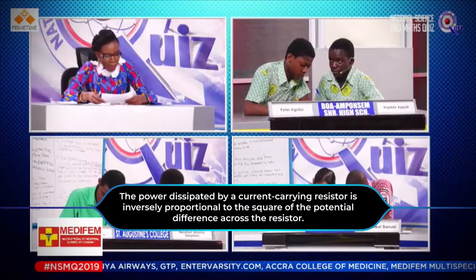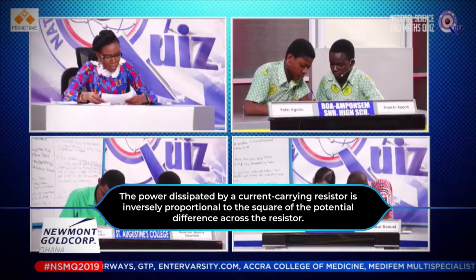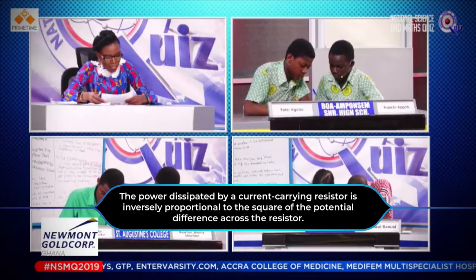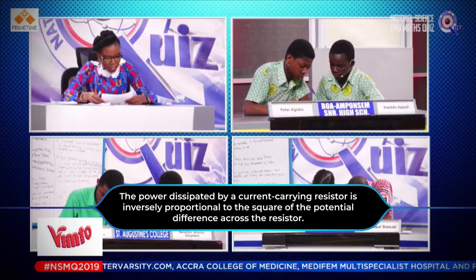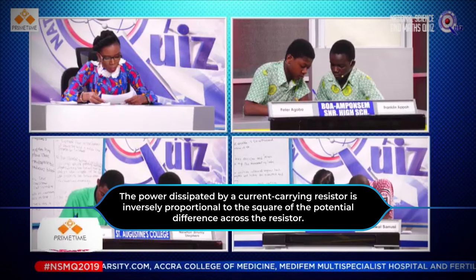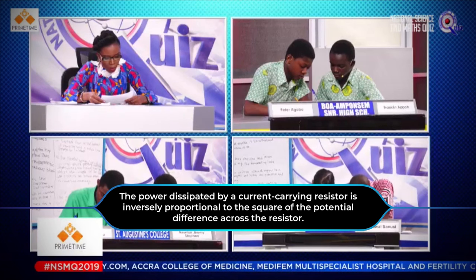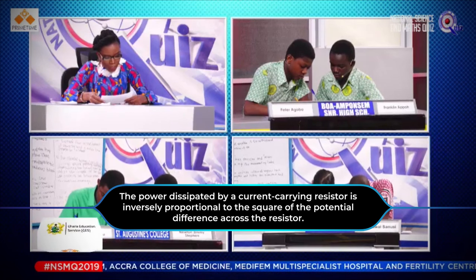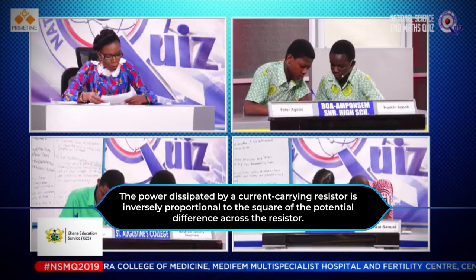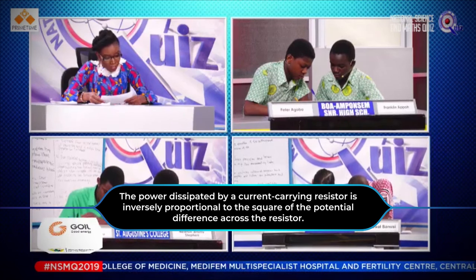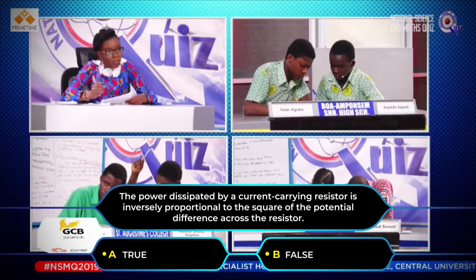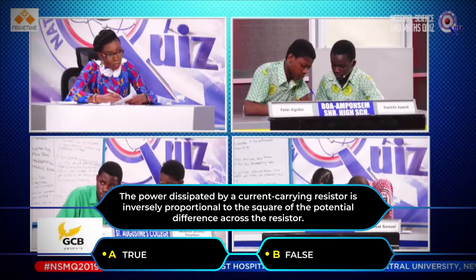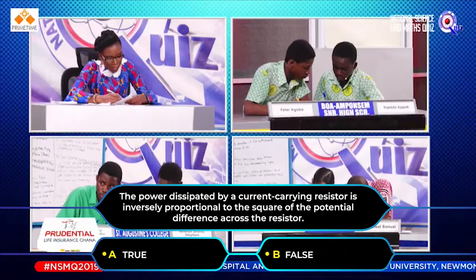The power dissipated by a current-carrying resistor is inversely proportional to the square of the potential difference across the resistor. False.